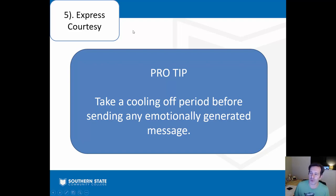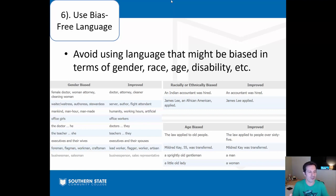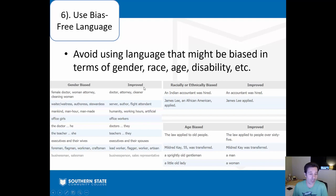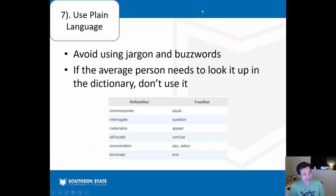Number six: use bias-free language. I have trouble with this sometimes — referring to a classroom as 'you guys' or defaulting to male pronouns. We should use gender-neutral language in our writing. For example, instead of 'the cleaning woman,' say 'the cleaner.' Instead of 'the doctor — he,' use 'they' when gender isn't known. This applies to race, age, disabilities, and other characteristics as well.